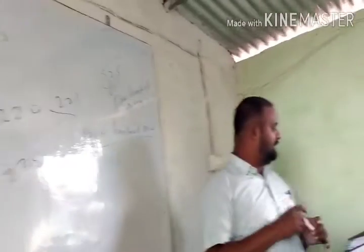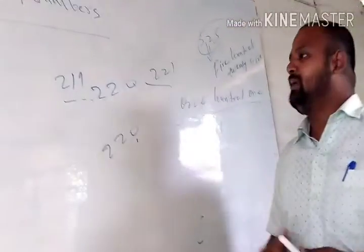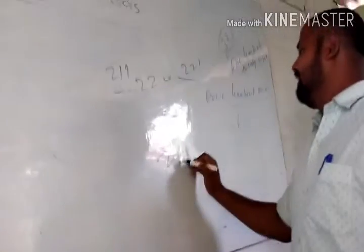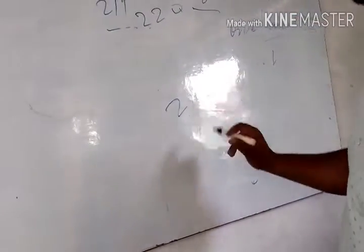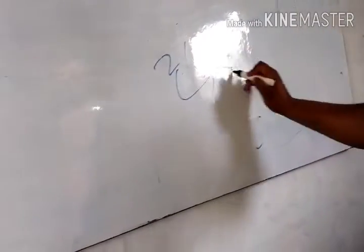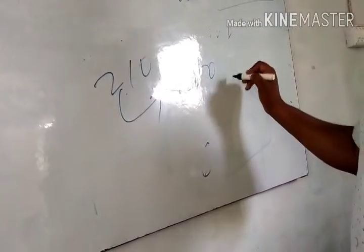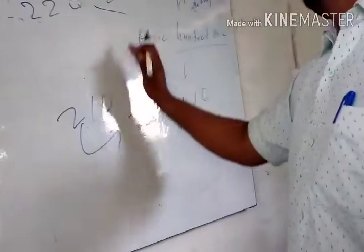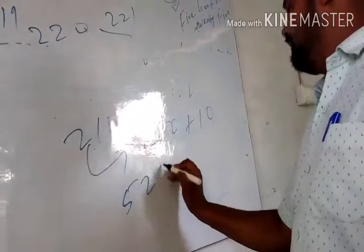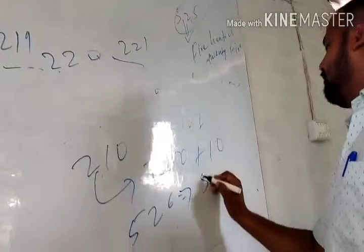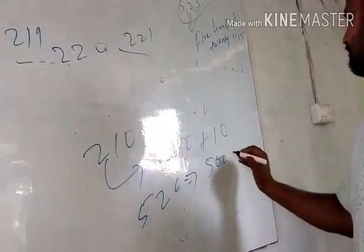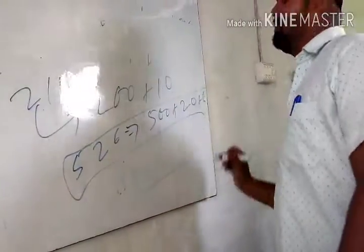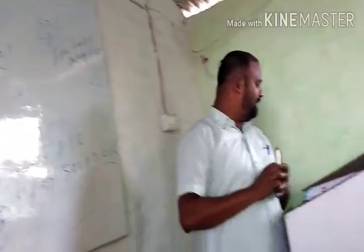Now we will look at expanded form. 220 in expanded form is 200 plus 20. And we have number 526 — its expanded form is 500 plus 20 plus 6. So this will be the expanded form.